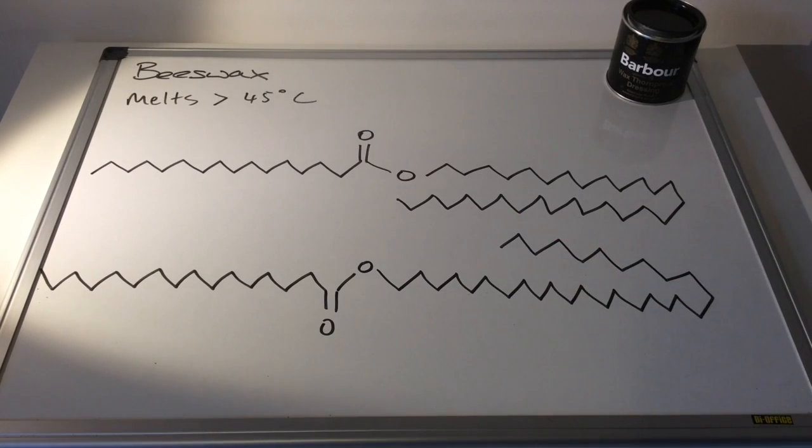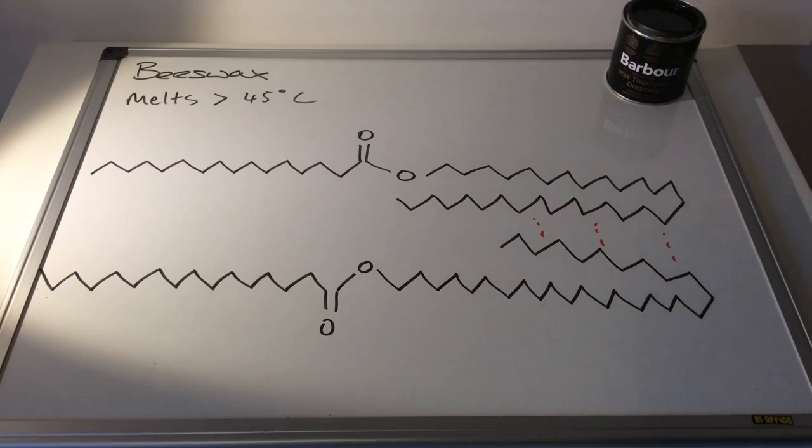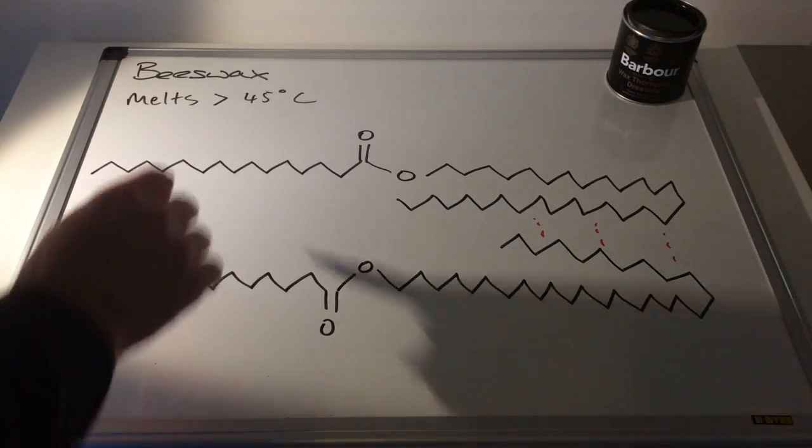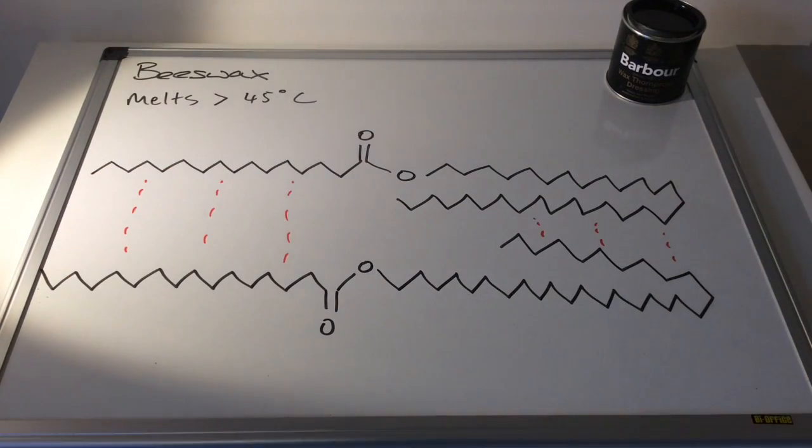Why would something like beeswax melt at a temperature above 45 degrees C? Well, it's all down to the strength of the intermolecular forces that exist between the wax molecules. We've got quite strong intermolecular forces because these molecules are so large—we've got lots of atoms in the wax molecule and therefore lots of electrons, and so the intermolecular forces, which would be van der Waals forces or London forces in this case, would be quite strong.